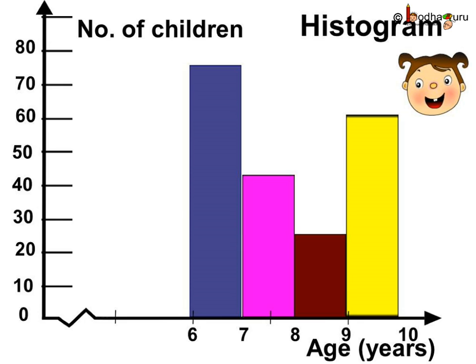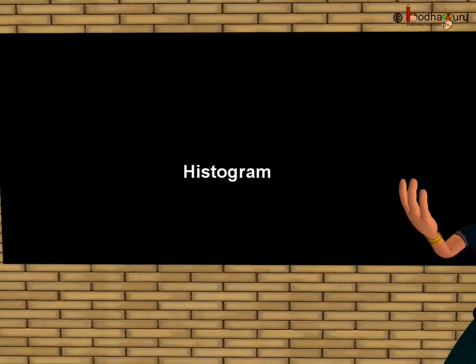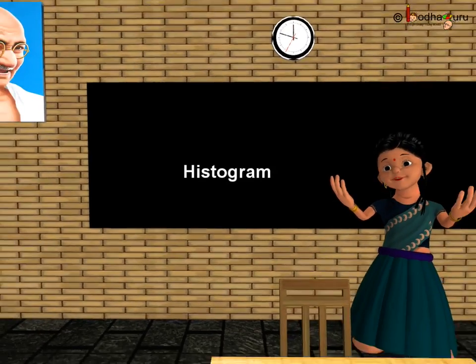It has adjacent bars over the intervals. The width of the bar is uniform and it is the interval; the length of the bar indicates the given number — here it represents the number of children in different age groups in the zoo. That's all for now. Bye bye children.